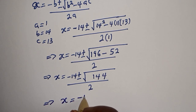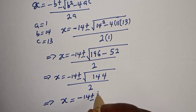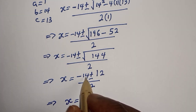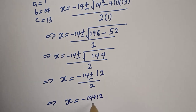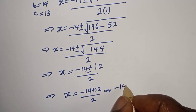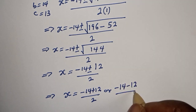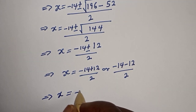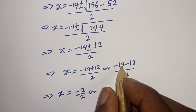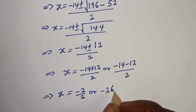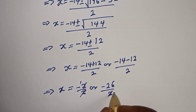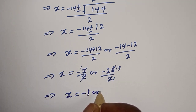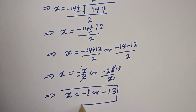s is equal to minus 14 plus or minus square root of 144 — that is 12 — over 2. So s equals minus 14 plus 12 over 2, which gives minus 2 over 2, or s equals minus 14 minus 12 — that is minus 26 — over 2. This simplifies to s is equal to minus 1 or minus 13. This is the final answer.